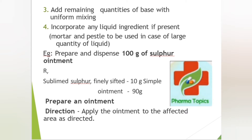Examples of ointments prepared by trituration method include: simple ointment, sulfur ointment, emulsifying ointment, and compound benzoic acid ointment (also called Whitfield's ointment). For preparing sulfur ointment, the ingredients are sulfur and simple ointment, which is applied to the affected area.